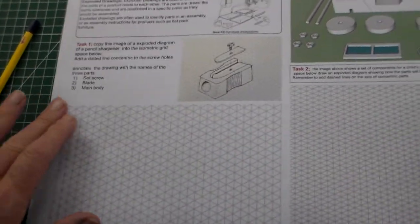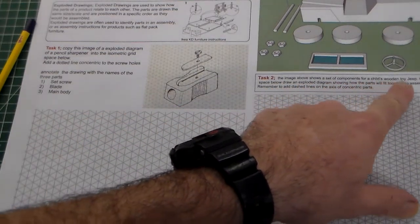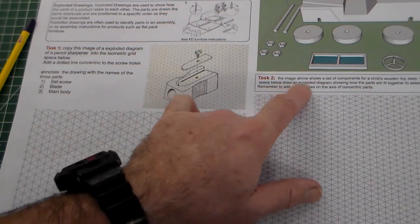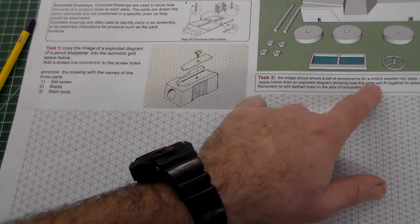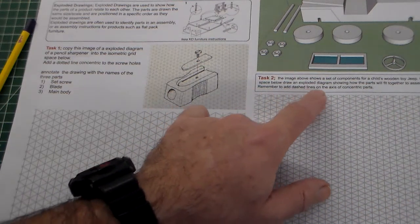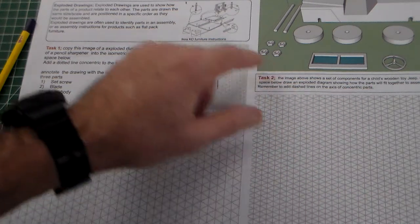The second task, it says the image above shows a set of components for a child's wooden toy jeep. On the isometric space below, draw an exploded diagram showing how the parts would fit together to assemble the toy. Remember to add the dash and dotted lines on the axis of concentric parts.